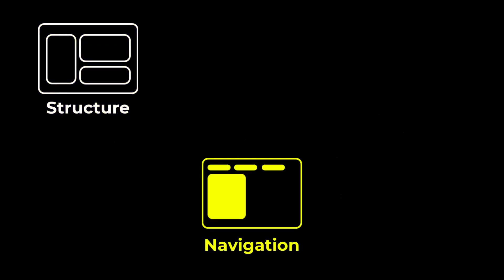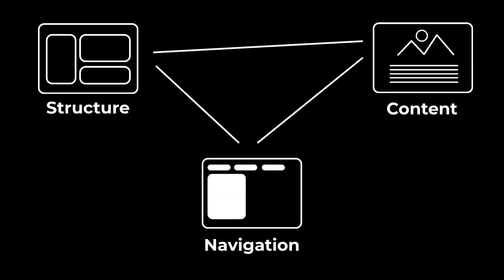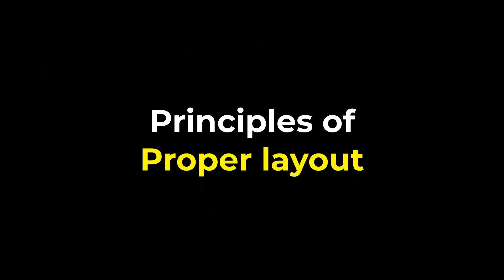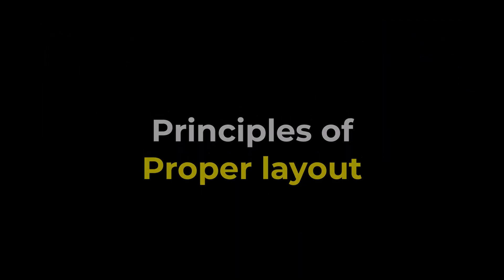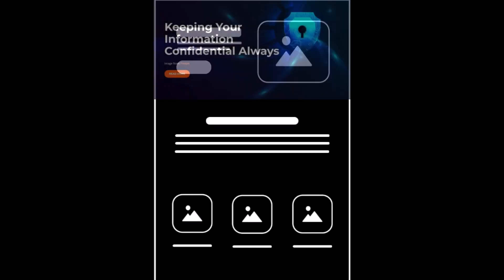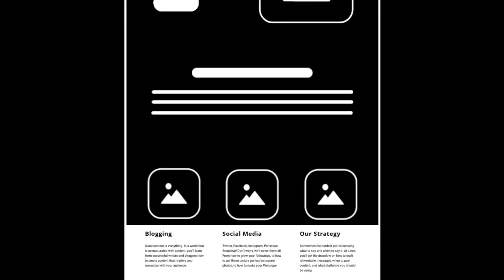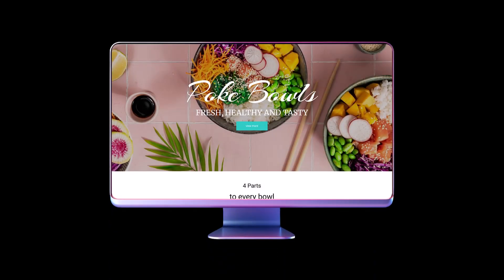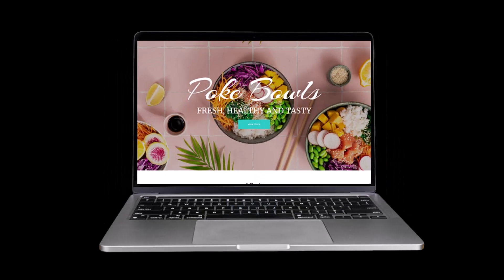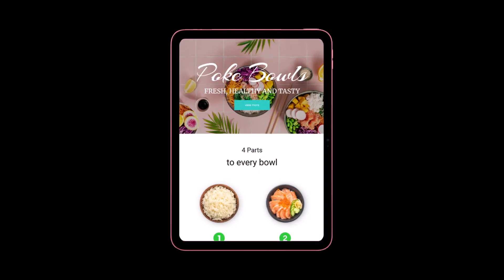Basic number three: proper layout is necessary. Structure and navigation are closely connected with content positioning on a page, referring to principles of a proper layout. A good layout is when everything — every section, every element, every word — feels perfectly placed. And this principle should work no matter the device the person uses, whether it is a huge screen or a tiny mobile phone.